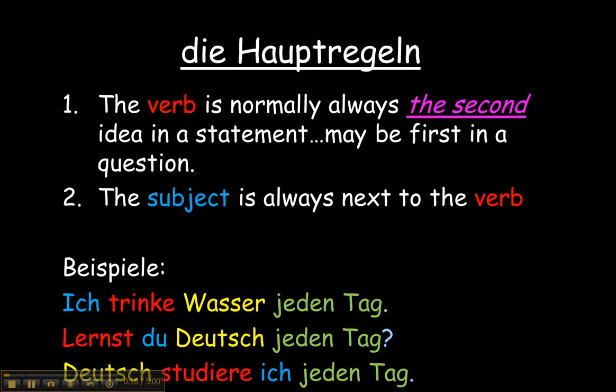Nummer eins, or number one: the verb is normally always the second idea in a statement, or the second word when you are making a statement in German. It may be the first if you are forming a question. The subject, however, will always be next to the verb.